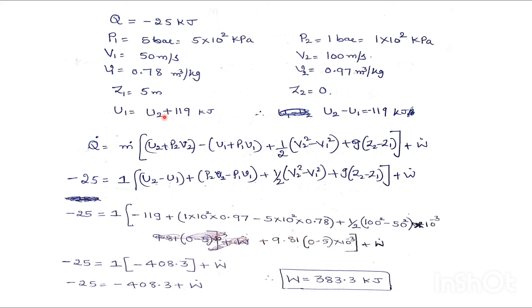Similarly, internal energy is greater by 119 kilo joules than the exit. So U1 will be equals to U2 plus 119 kilo joules, we can write here. Similarly, these all values he has given in the problem.